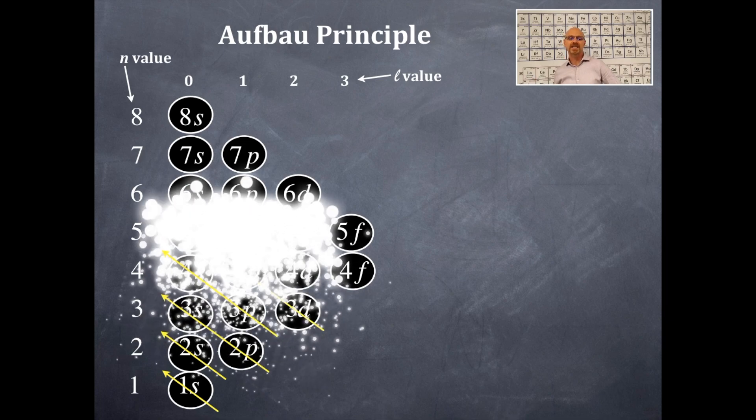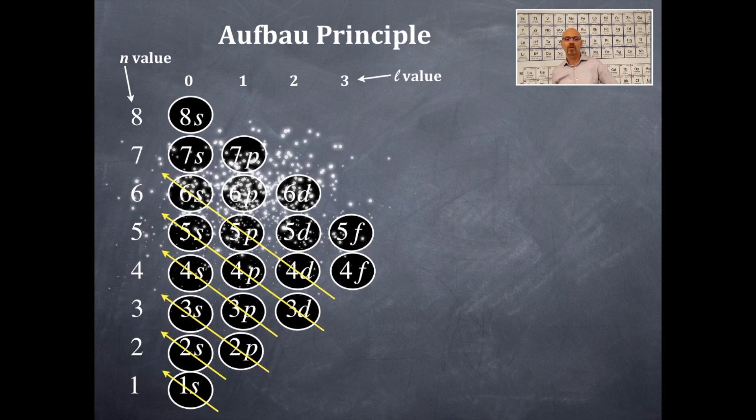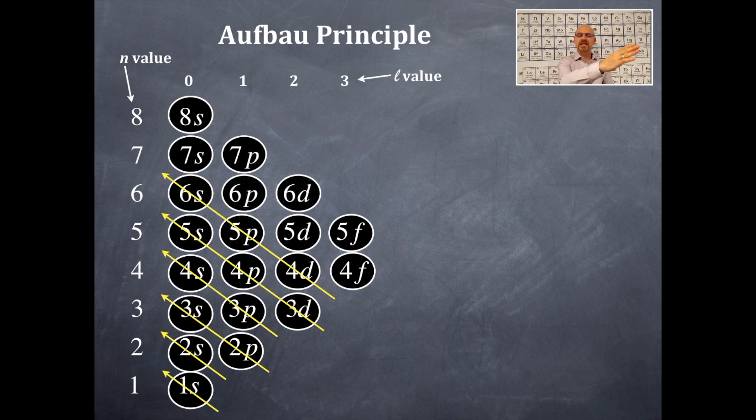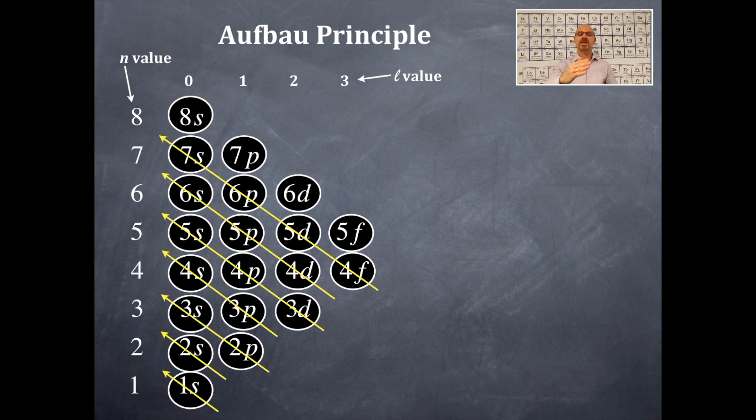After 4s is 3d, 4p, 5s. After 5s is 4d, 5p, 6s. After 6s is 4f, 5d, 6p, 7s. And then after 7s is 5f, 6d, 7p, and 8s.